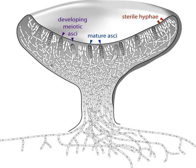Ascocarps are most commonly bowl-shaped, but may take a spherical Kleistothecia or flask-like Perithecium form.